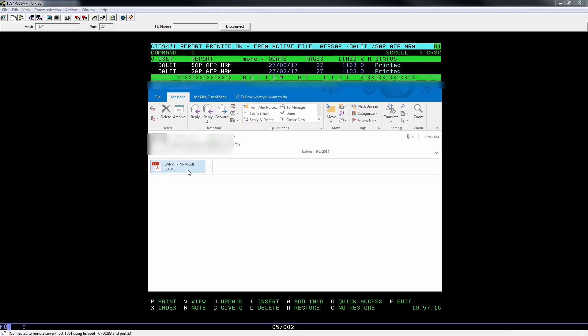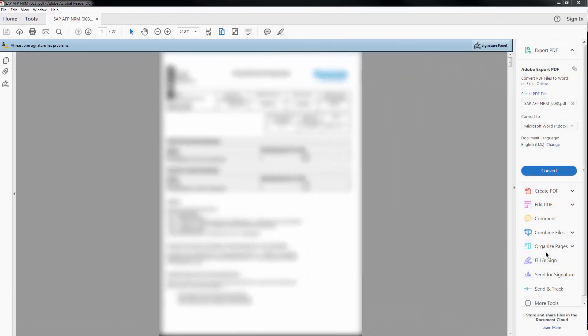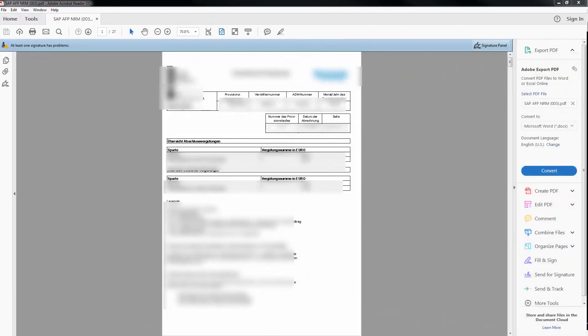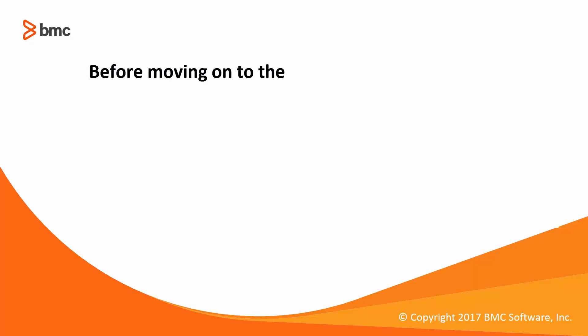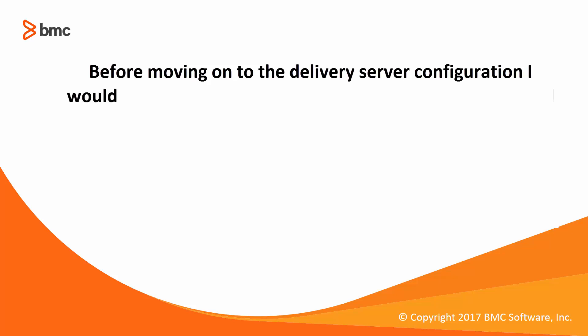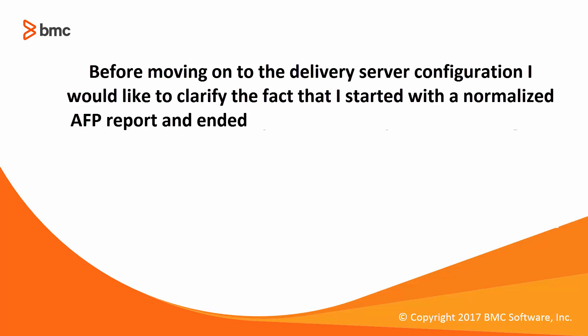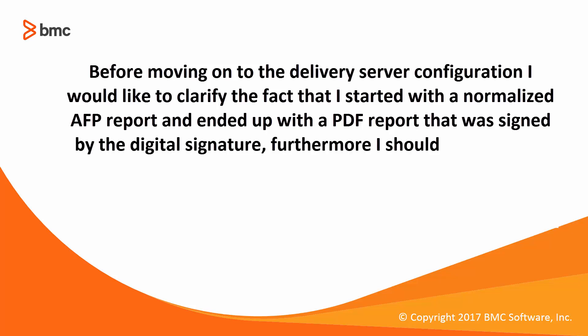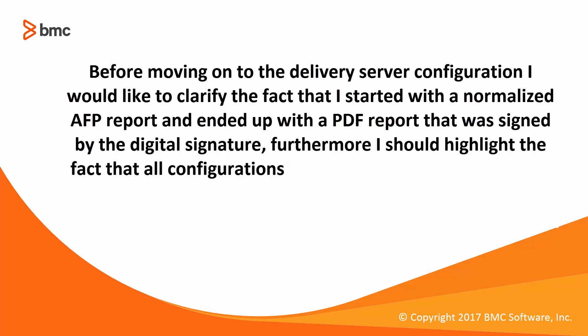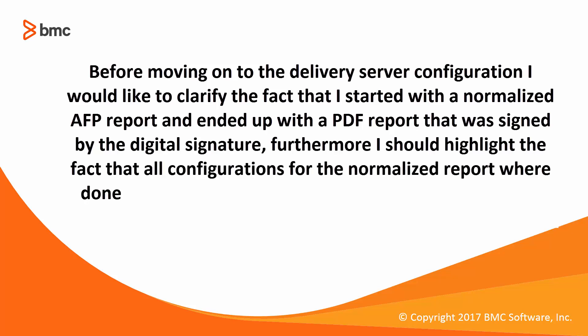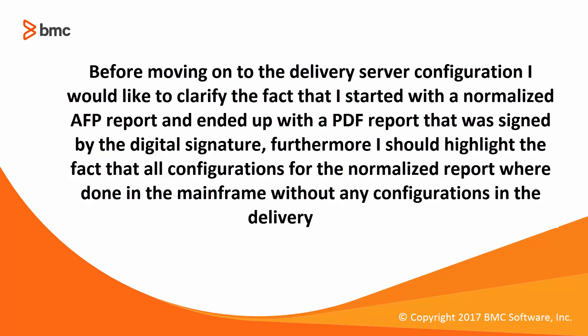Let's click and open to view the digital signature. After opening the PDF report, a blue ribbon is viewed at the top of the report with the signature panel. This signifies the success of the configuration of the digital signature. Before moving on to the delivery server configuration, I would like to clarify that I started with a normalized AFP report and ended up with a PDF report that was signed by the digital signature. Furthermore, all configurations for the normalized report were done in the mainframe without any configurations in the delivery server.